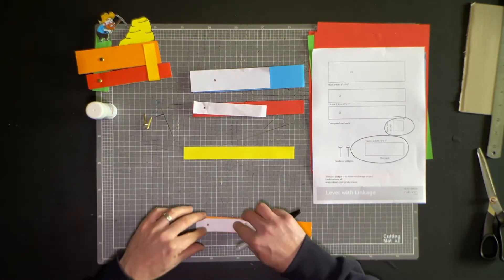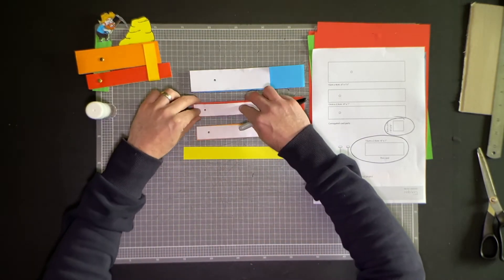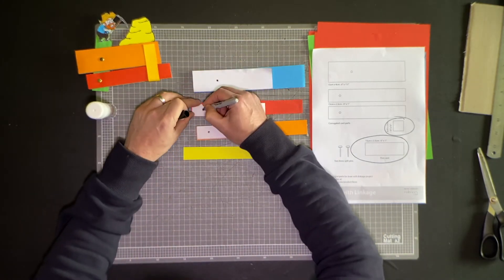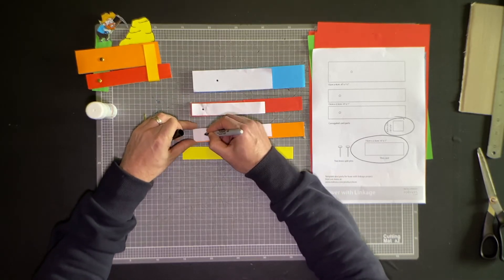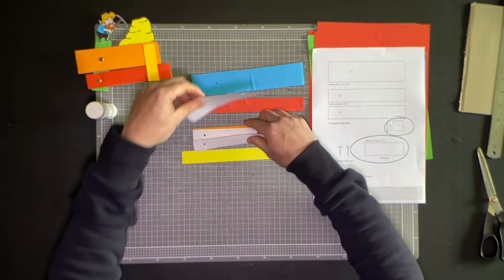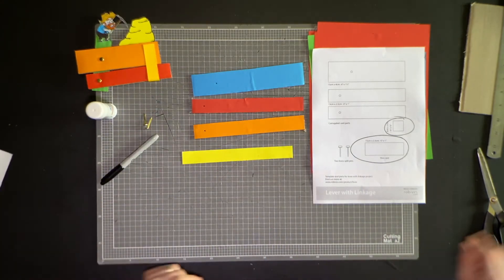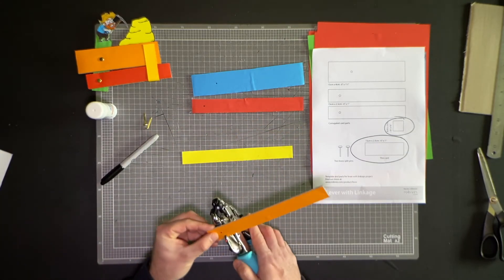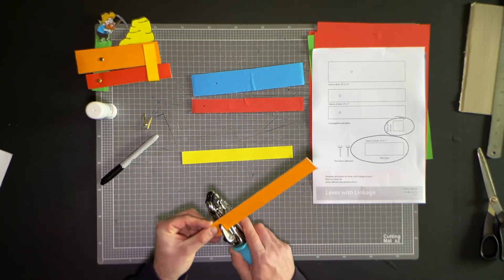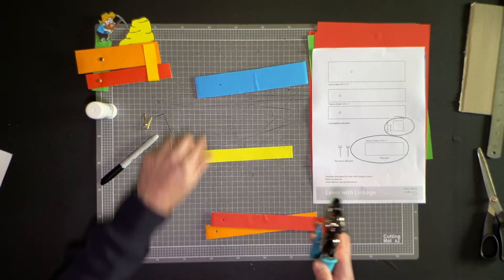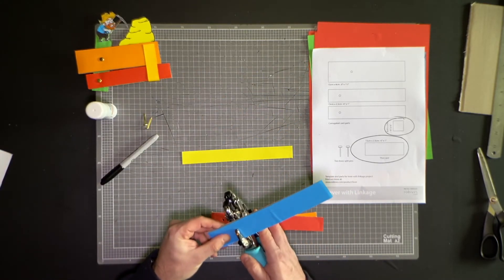Now that you have your colored card onto your lever links, I'm just going to mark with a marker where I need to mark those holes. I can take those off now. I then get my hole punch and just punch a hole into there.